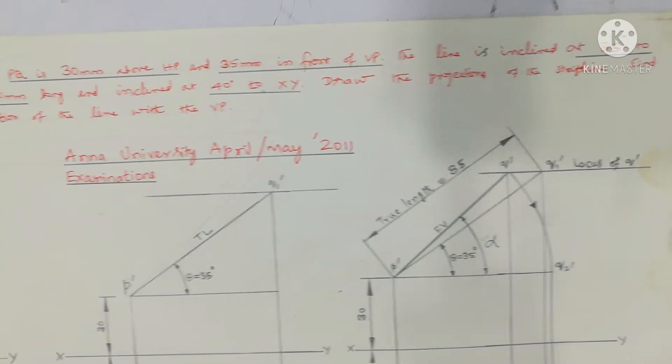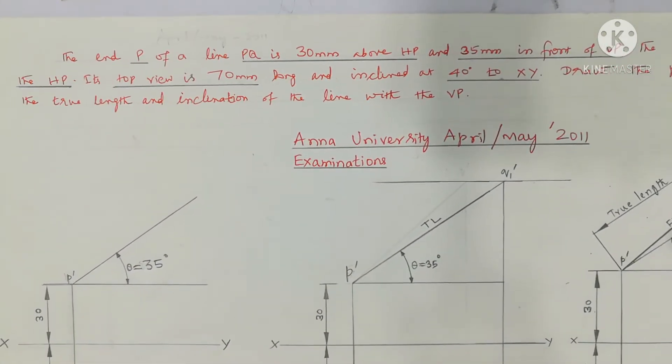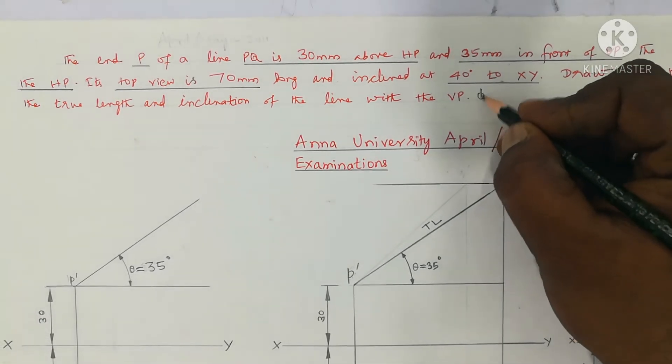Find the true inclination or the true length of the line and its inclination of the line with VB. The true inclination with VB is phi, the phi angle is the notation.